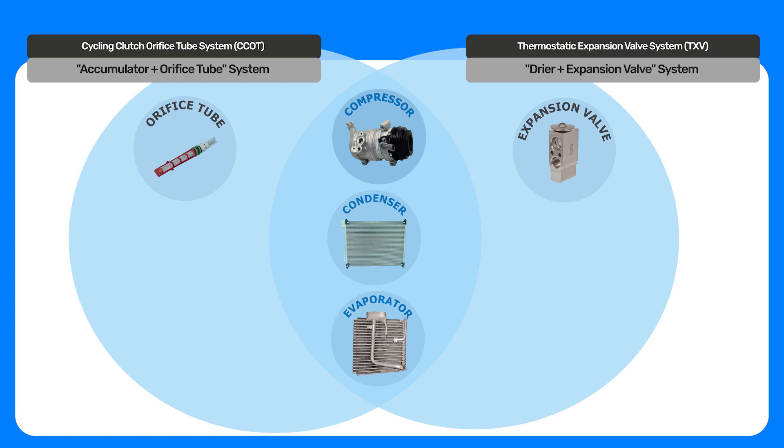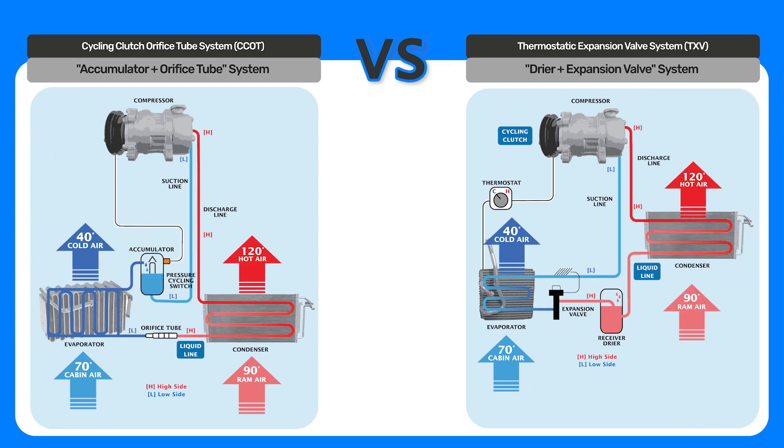On the expansion valve system, you have a dryer as opposed to an accumulator. A dryer just has a desiccant in it and it filters any debris that might be in the system. It's also located in the liquid line.